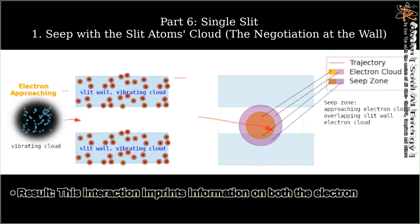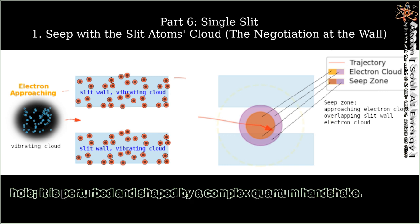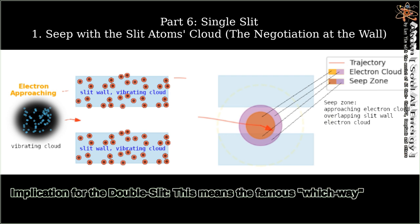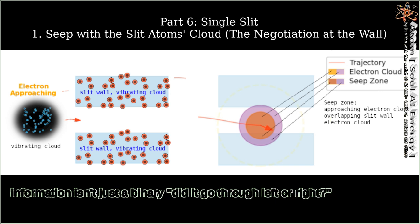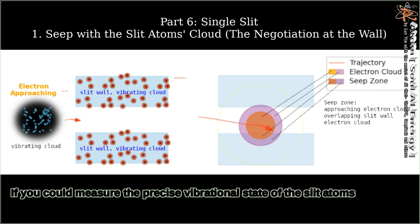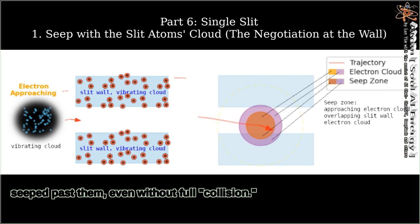Result: This interaction imprints information on both the electron and the slit. The electron's cloud is not just trimmed by a geometric hole. It is perturbed and shaped by a complex quantum handshake. This could slightly alter its phase, energy, or internal state distribution. Implication for the double slit: This means the famous which-way information isn't just a binary—did it go through left or right? It's a spectrum of interaction histories. If you could measure the precise vibrational state of the slit atoms after the electron passes, you might deduce how closely the electron seeped past them, even without full collision.